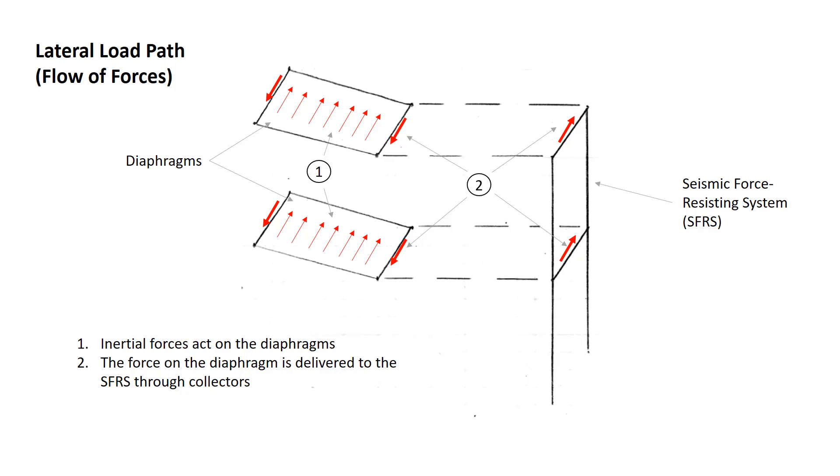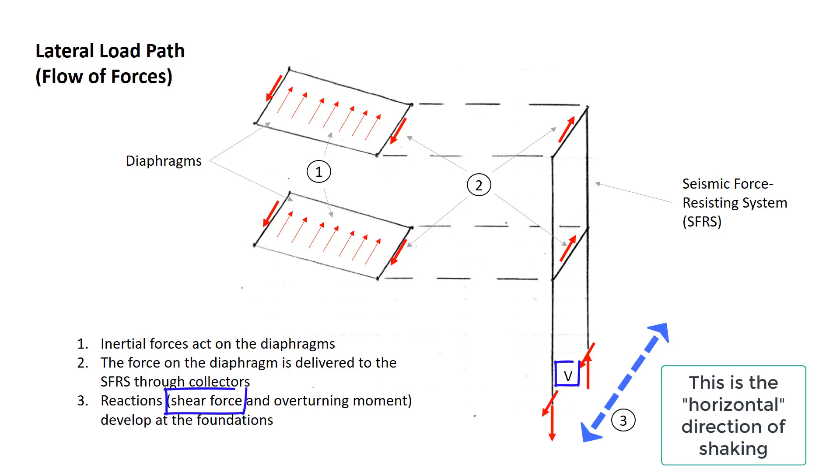Now we have a laterally loaded frame, and we need to see what reactions are developed at the base. One is the shear force—we often talk about base shear—and the other is the overturning moment. The shear force is represented by the two horizontal arrows at the base of the frame.